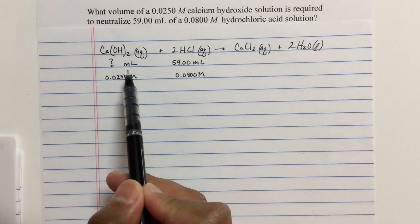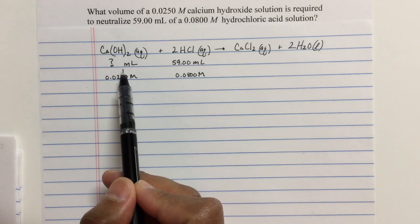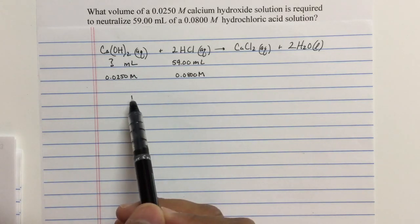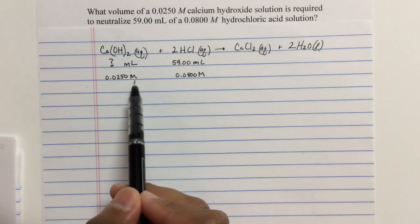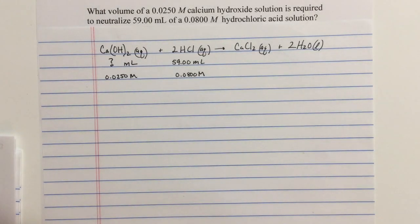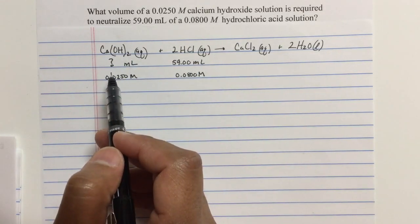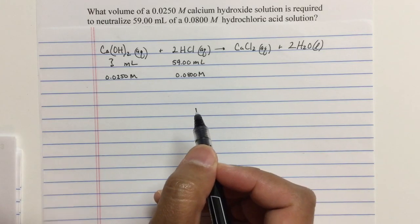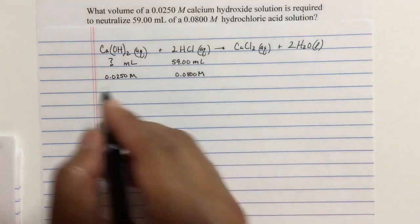Now remember, in previous videos, I've shown you the relationship between the volume, the molarity, and the moles. To find the volume, we need to know the molarity and the number of moles. So that's where we're going to start. How many moles of calcium hydroxide react with moles of HCl? Let's get the moles of HCl first.